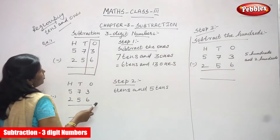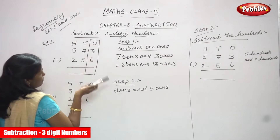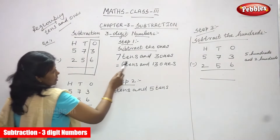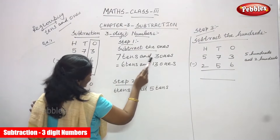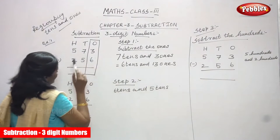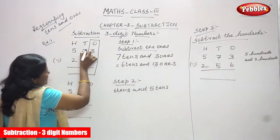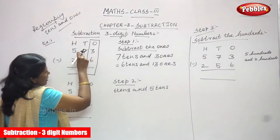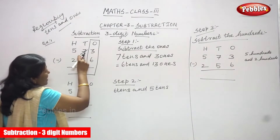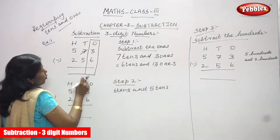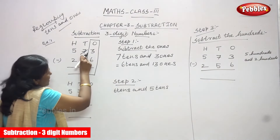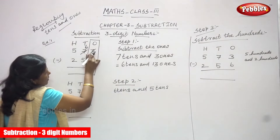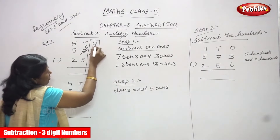Regrouping means you have to borrow from tens. There are 7 tens and 3 ones. Now I am going to borrow 1 ten from 7 tens. So this 7 tens becomes 6 tens, and this 3 ones will become 13.